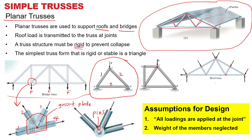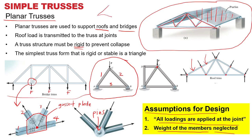Why? Because it's a simple way for you to analyze manually. These are the assumptions of the design: all loadings are applied to the joint, and the weight of the members is neglected. We do take into account the weight of the roof — the roof is very heavy. If you look at your house roof, it can be made of concrete or clay. This single roof element is quite heavy — it's probably going to weigh about 1 to 2 kg.